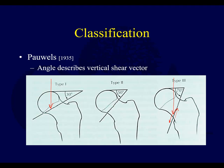When it comes to non-union repair, the strategies essentially try to convert these into something more like a Pauwels one, where you have compressive forces.